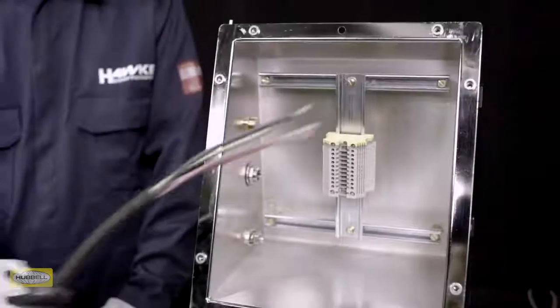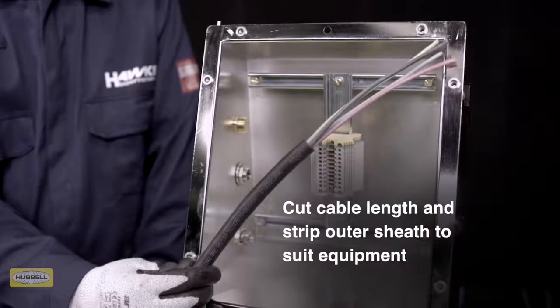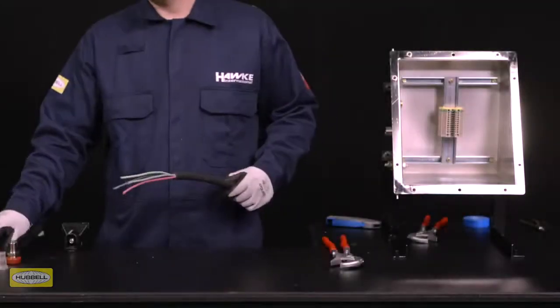Assembly instructions are provided with Hawk cable glands or can be downloaded from the Hawk website. Allow sufficient length of cable and strip the outer sheath to suit the equipment the cable is being terminated into. Slide the back nuts and middle nuts onto the cable.